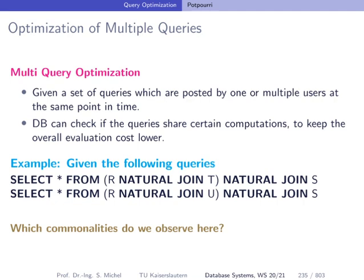We will not look at this in detail but for completeness I want to briefly talk about optimizing multiple queries. The idea is you have a workload of queries that all came into the database system at once or briefly after each other. In this case we have two queries: a join between R and T, a natural join, then we join S on the result; and for the second query we have R natural join U, then join with S.